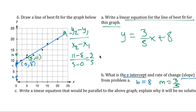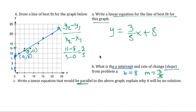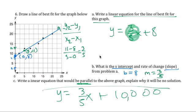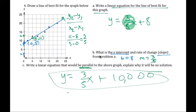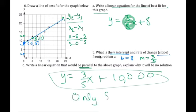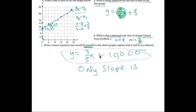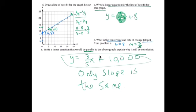Write an equation that would be parallel to that graph. Parallel lines have the same slope. So depending on your slope, you write y equals 3/5 x and the y-intercept can be anything you want. That's why it's no solution — same slope only, not the same y-intercept. Only the slope is the same. Hope that helps.